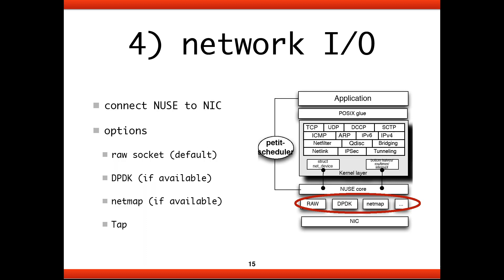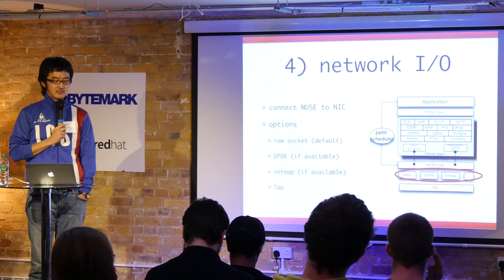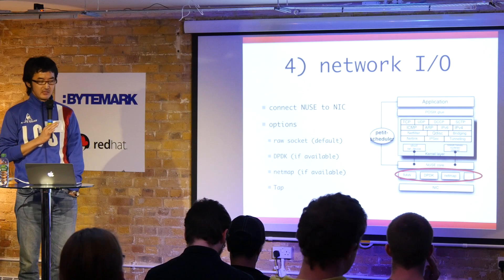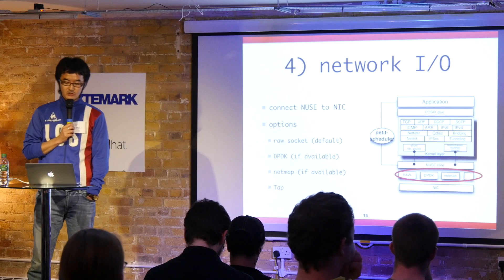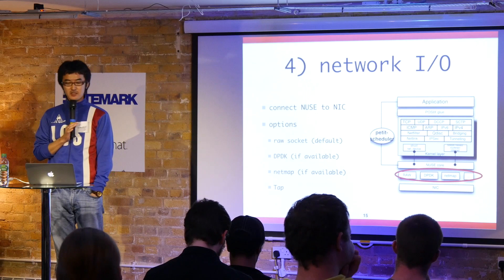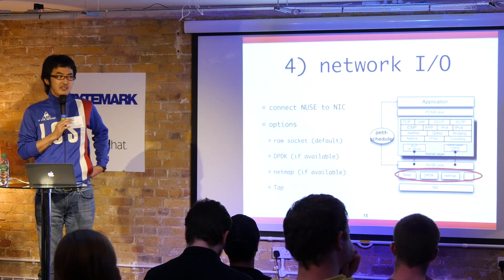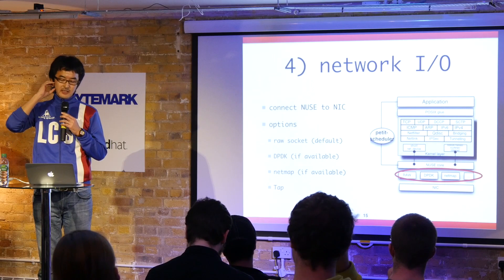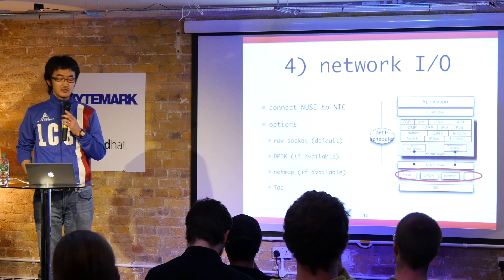The last component is the network I/O interface to connect the NUSE user-space networking stack to the network interface card. Right now, as the LAMP kernel has, we have four options: raw socket-based, NetMap high-speed I/O, Intel DPDK, and TAP-based interfaces. We can use any kind of technology like PF_RING or pipes or whatever.